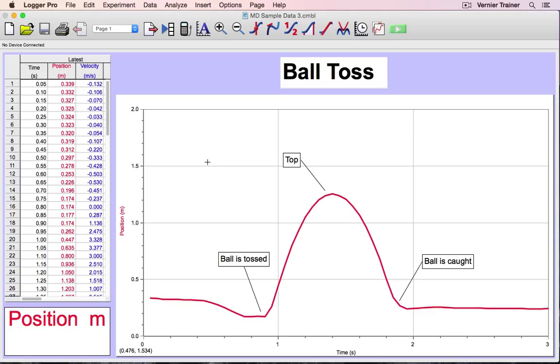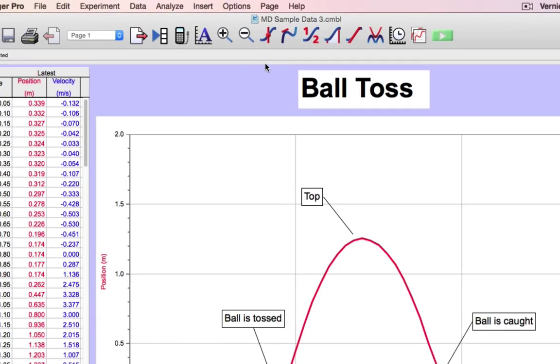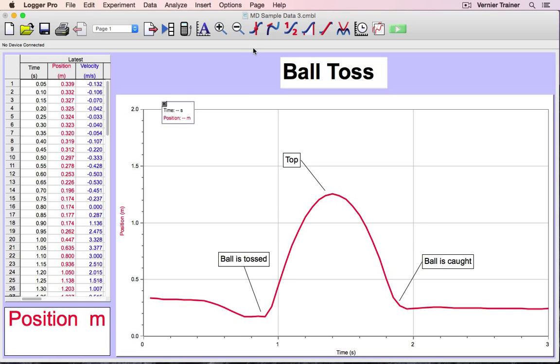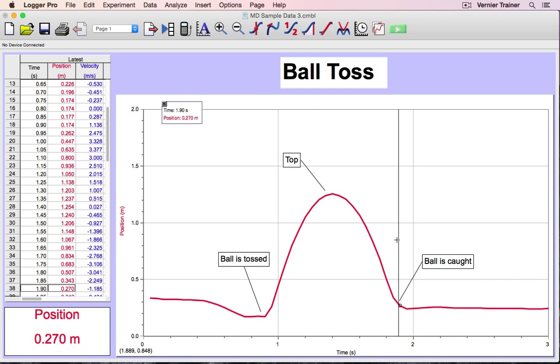sometimes you'll want to know the details while viewing the graph. Logger Pro has an easy tool for doing this, the examine tool. The examine tool is accessed most easily from the shortcut bar. Examine brings up a small dialog box showing the details of each data point as you move back and forth over the graph. I'll often use the examine tool to quickly find a maximum or minimum value.